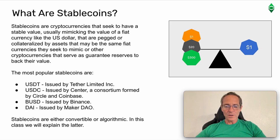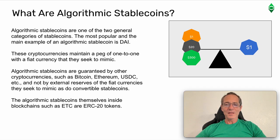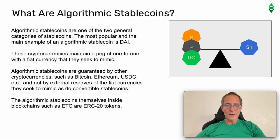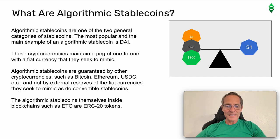Stablecoins are either convertible or algorithmic. In this class we will explain the latter. Algorithmic stablecoins are one of the two general categories of stablecoins. The most popular and main example of an algorithmic stablecoin is DAI. These cryptocurrencies maintain a peg of one-to-one with the fiat currency that they seek to mimic. Algorithmic stablecoins are guaranteed by other cryptocurrencies such as Bitcoin, Ethereum, USDC, etc., and not by external reserves of the fiat currencies they seek to mimic, as do convertible stablecoins. The algorithmic stablecoins themselves inside blockchains such as ETC are ERC20 tokens.